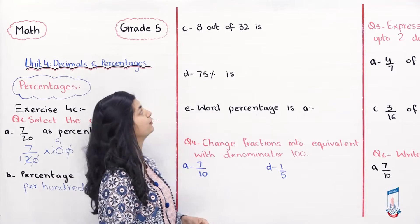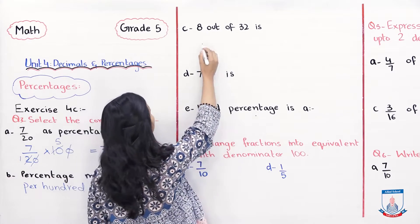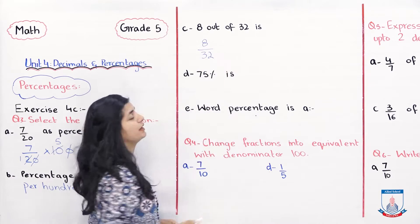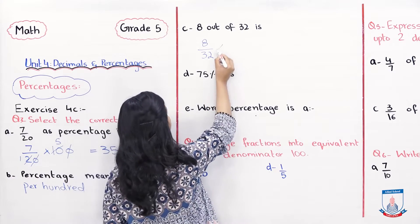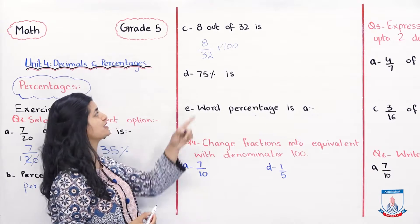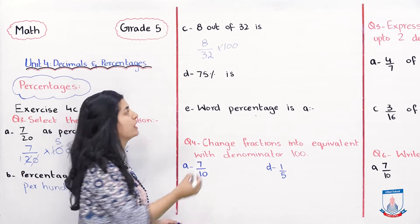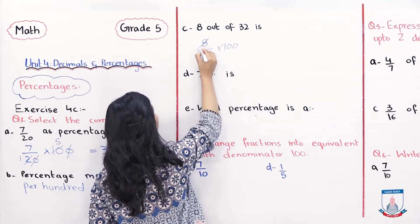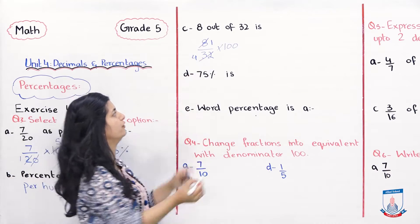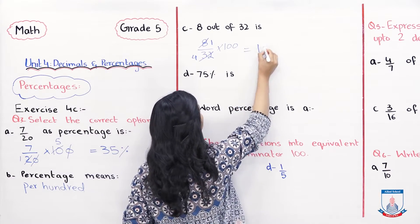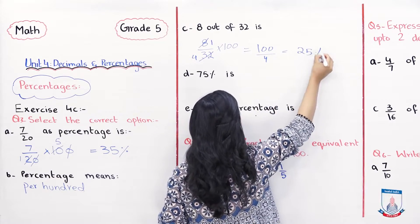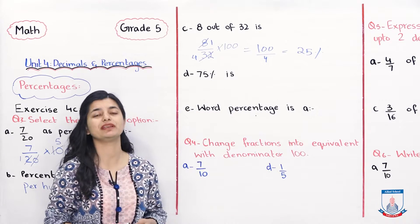Ishi tarah chalke ab hum part c ko dekhte hai. Part c hai 8 out of 32 is. So 8 over 32, isko hume ne in percentage form mein options dihi gahi hai. Before we can solve it, hum dekh sakte hai ki 8 or 32 dono 8 ke table mein aate hai. Aap dono ko 8 se divide karo, 8 divide by 8 is 1, 32 divide by 8 is 4. Toh 1 into 100 yaani 100 over 4. 100 over 4 hota hai 25 percent. Toh aapka answer for part c is 25 percent.